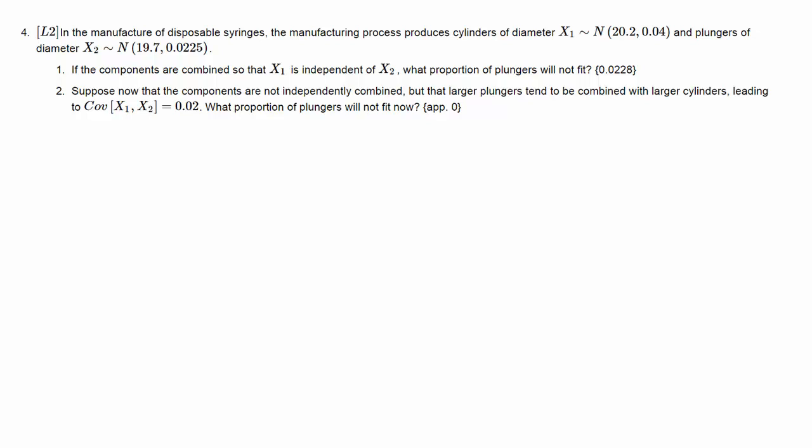This question deals with the combination of two normally distributed random variables. The example we're looking at is that we're producing syringes, so we need the cylinders and the plungers. Both of them are produced with some variation that follows a normal distribution.